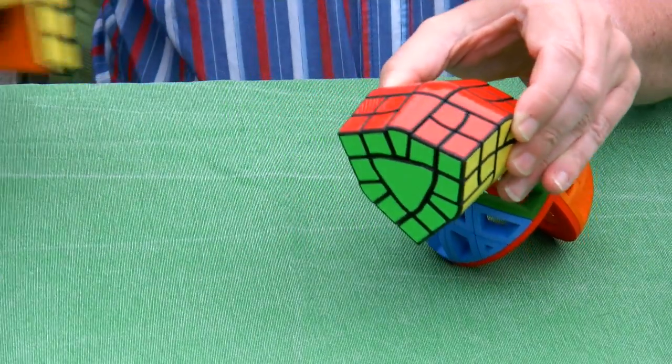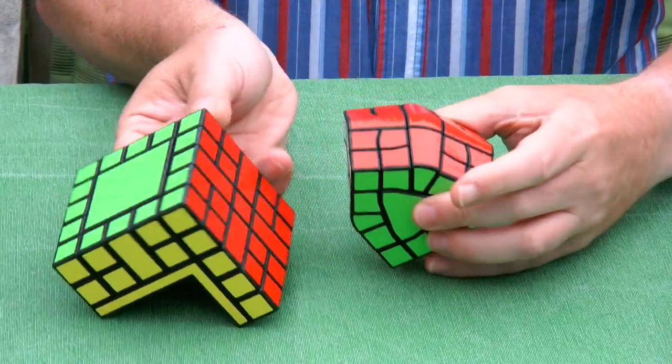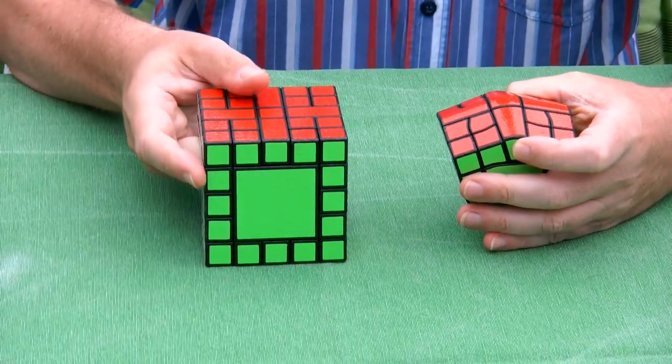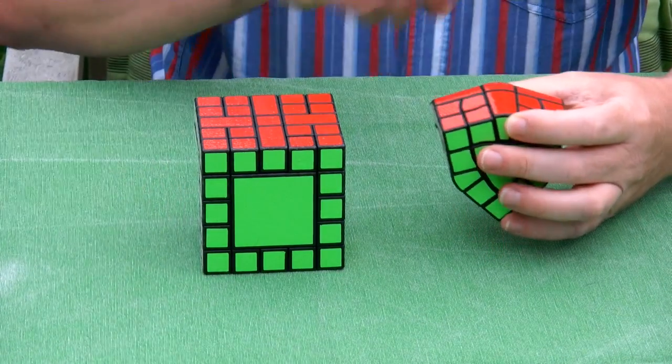So actually, another way of looking at Bram's block is to look at the not bandaged puzzle first. So on your left, this is the not bandaged puzzle and this is the Bram block.